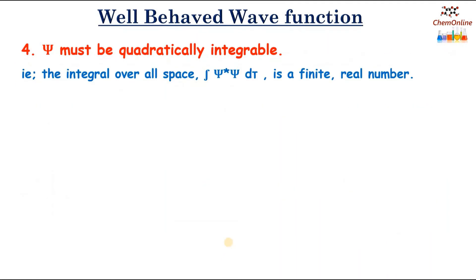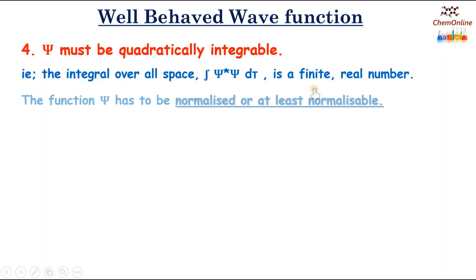The last condition is that ψ must be quadratically integrable — that is, the integral over all space, ∫ψ* · ψ dτ, must be a finite real number. We can also say that the function ψ has to be normalized or at least normalizable.